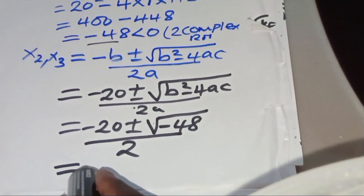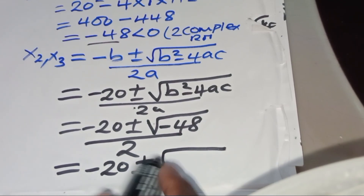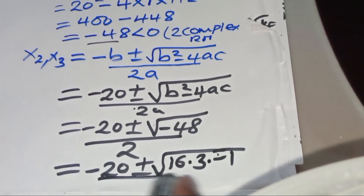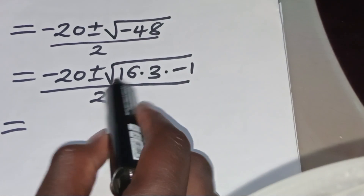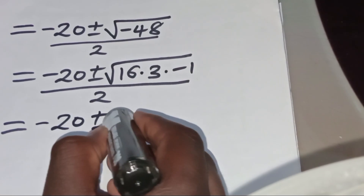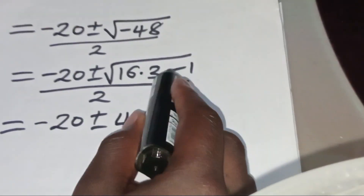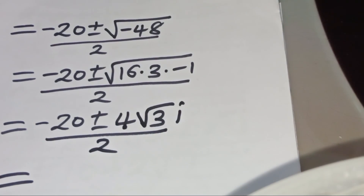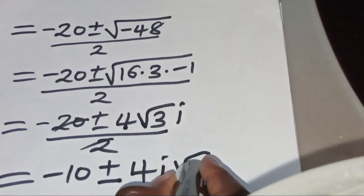We can express −48 as 16 × 3 × (−1), so √(−48) = 4i√3. Simplifying, we get −20 ± 4i√3 divided by 2, which equals −10 ± 4i√3.